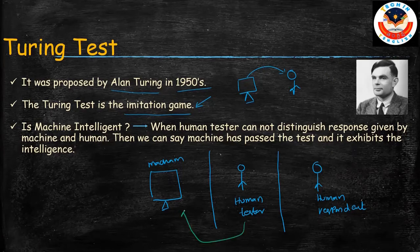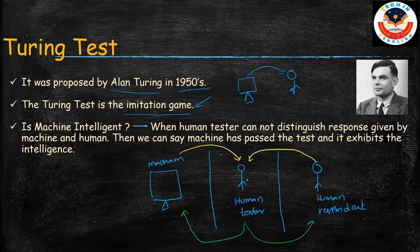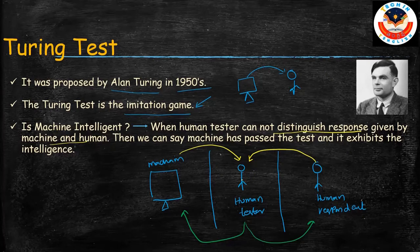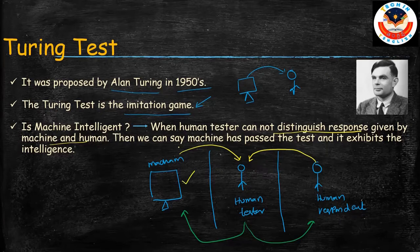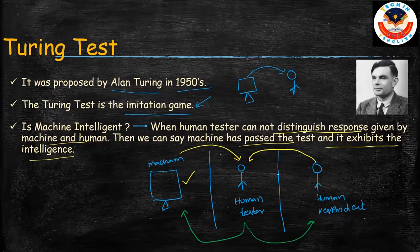The human tester is going to send questions to both the machine and the human respondent, and both are giving answers back to the tester. By looking at those answers, if the human tester cannot distinguish the responses given by the machine from those given by the human, then we can say the machine is also showing intelligence. In that case, we can say the machine has passed the test and it exhibits intelligence. That is what the simple Turing Test is.